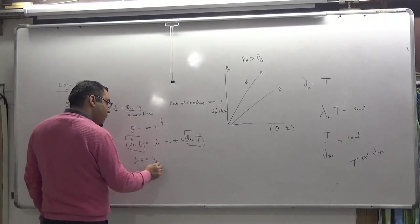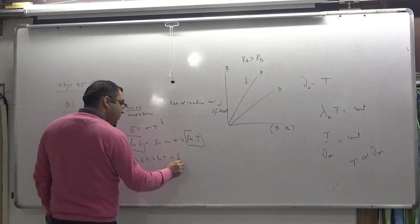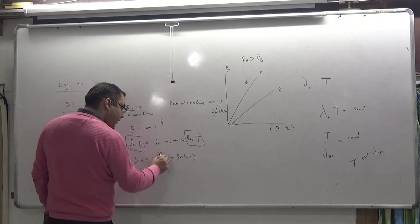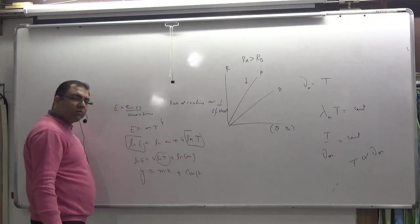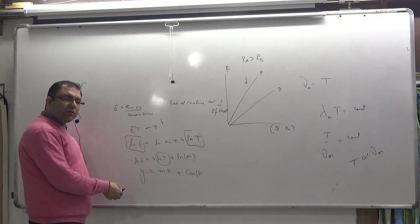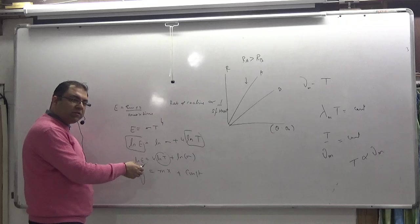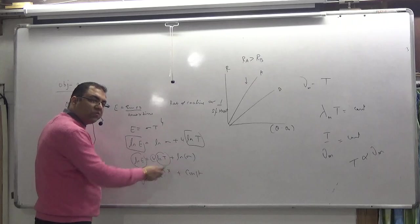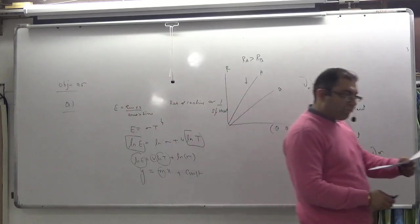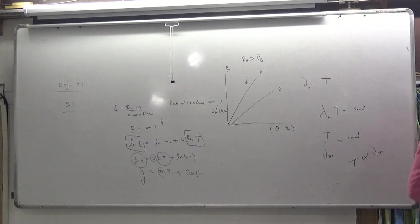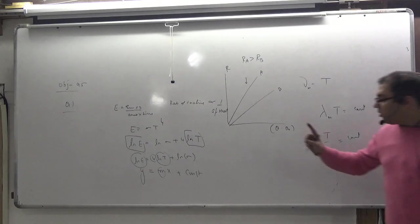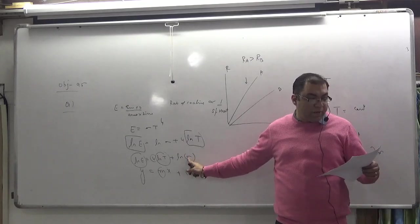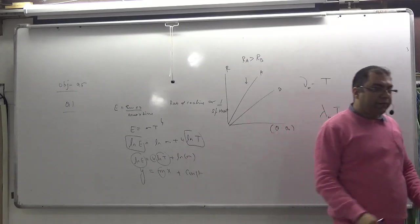Natural log of E equals 4 times natural log of T plus natural log of sigma. This is the y-axis, this is the x-axis, slope m equals 4, and some constant. So this is a straight line: y equals mx plus c. The graph will be option number D. For medical students: if the constant is positive, option D; if the constant is negative, option C.